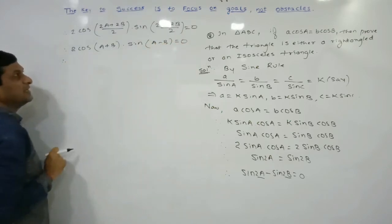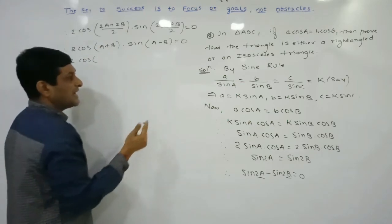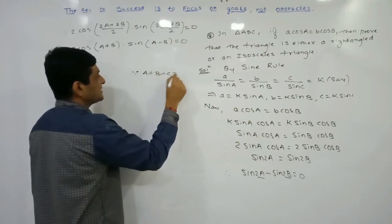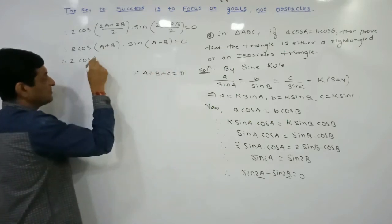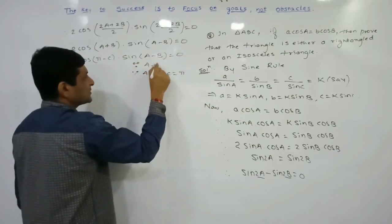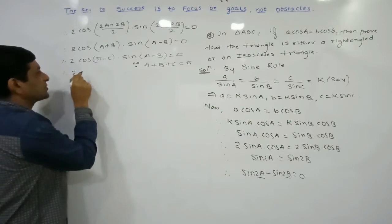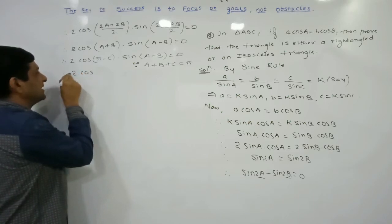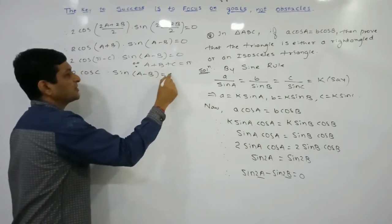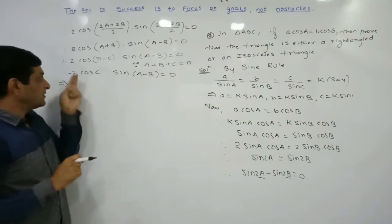Since A + B + C = π, we have A + B = π − C. Substituting: cos(π − C) = −cos C by the allied angle formula. So the equation becomes −2·cos C · sin(A − B) = 0. The first factor −2 is non-zero, so either cos C = 0 or sin(A − B) = 0.